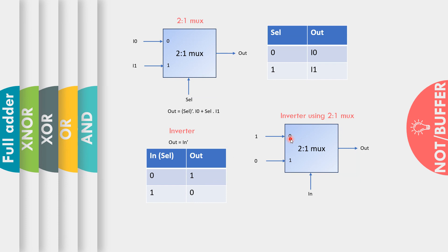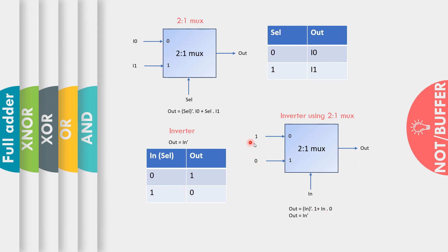So we tie data input line I0 to 1 and data input line I1 to 0, with the input connected to the select line — and at the output we get the inverted signal. The second way is via the Boolean expression: the inverter output is input_bar. Replacing select with the input, setting I0 to 1 (so that term becomes input_bar · 1 = input_bar) and setting I1 to 0 (to eliminate the non-inverted term), we get output = input_bar.